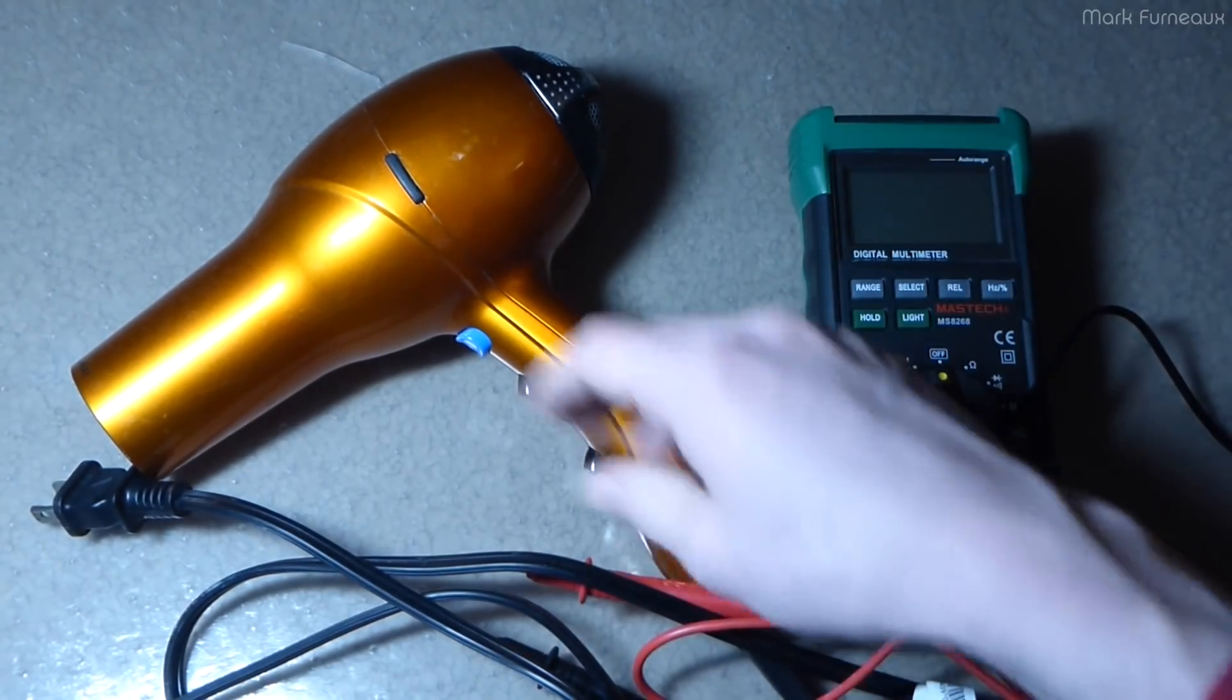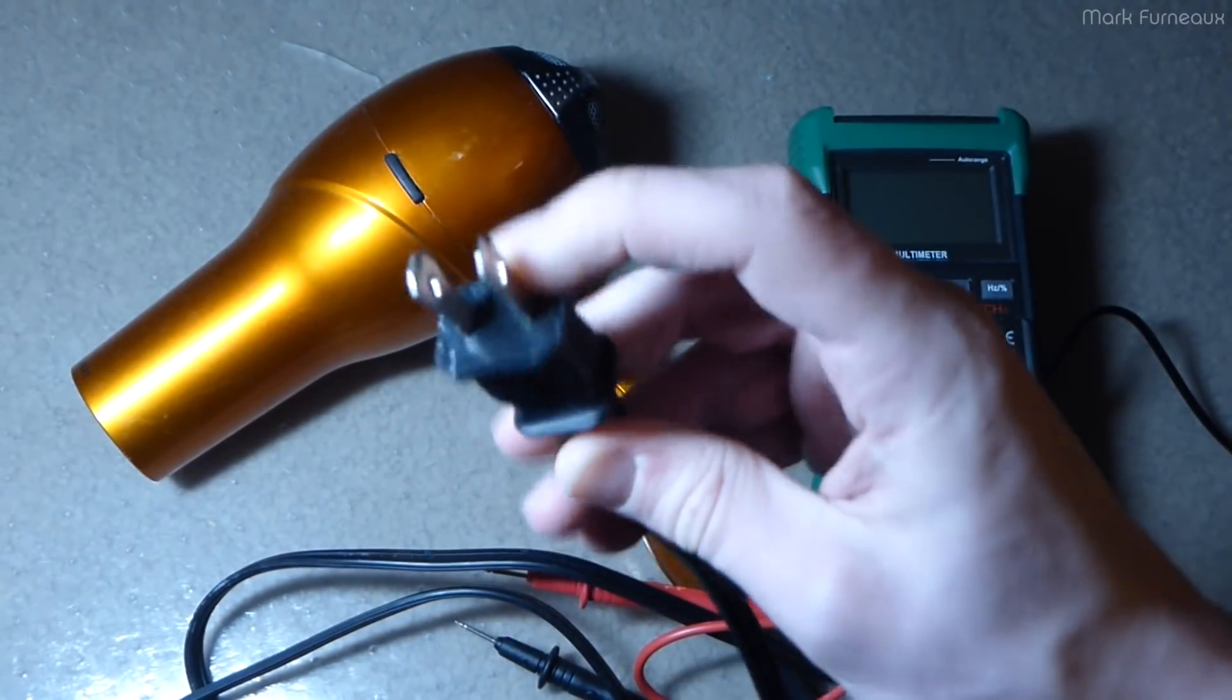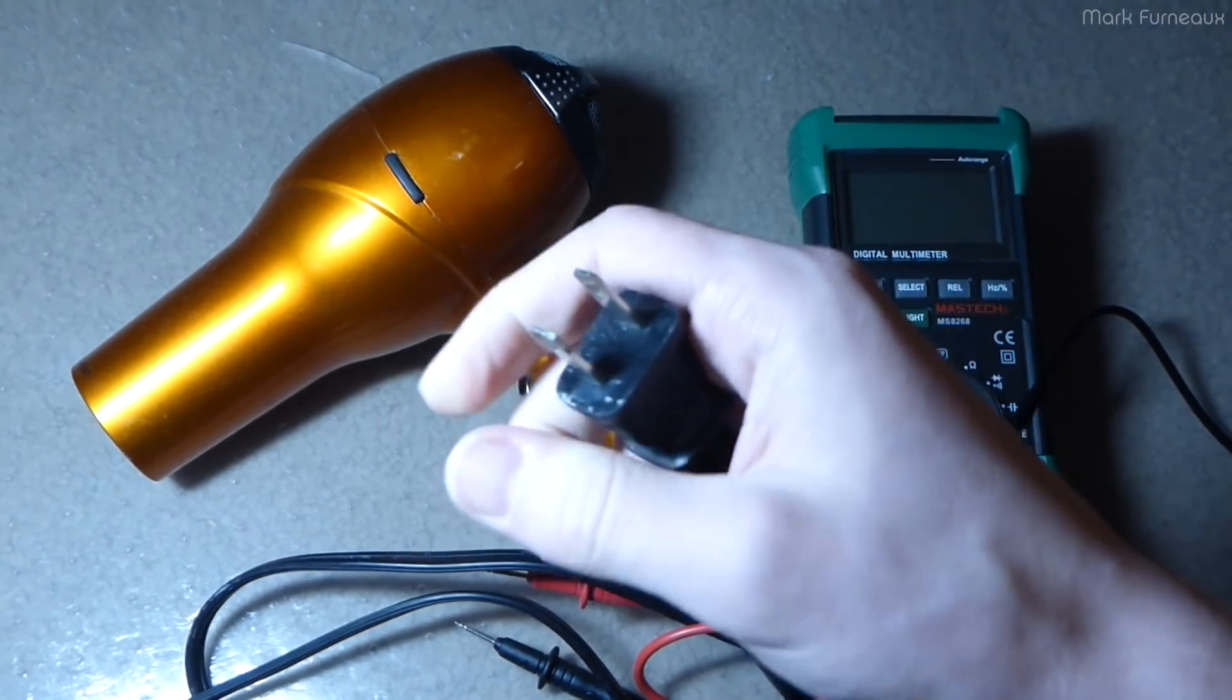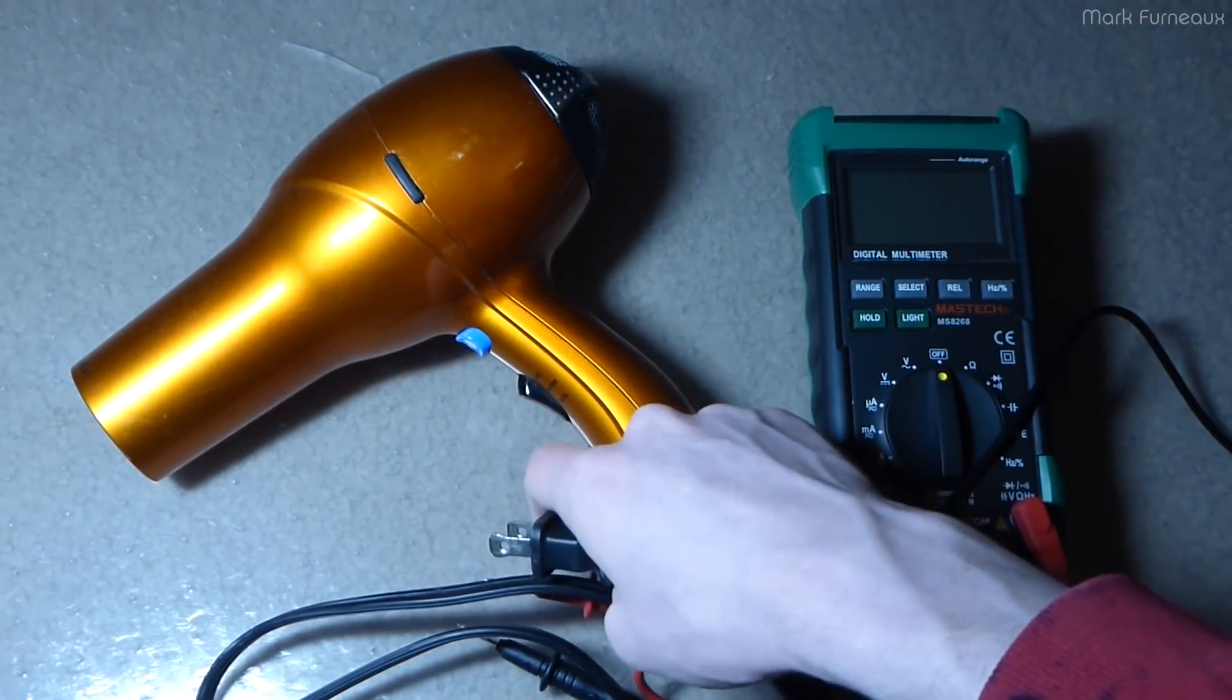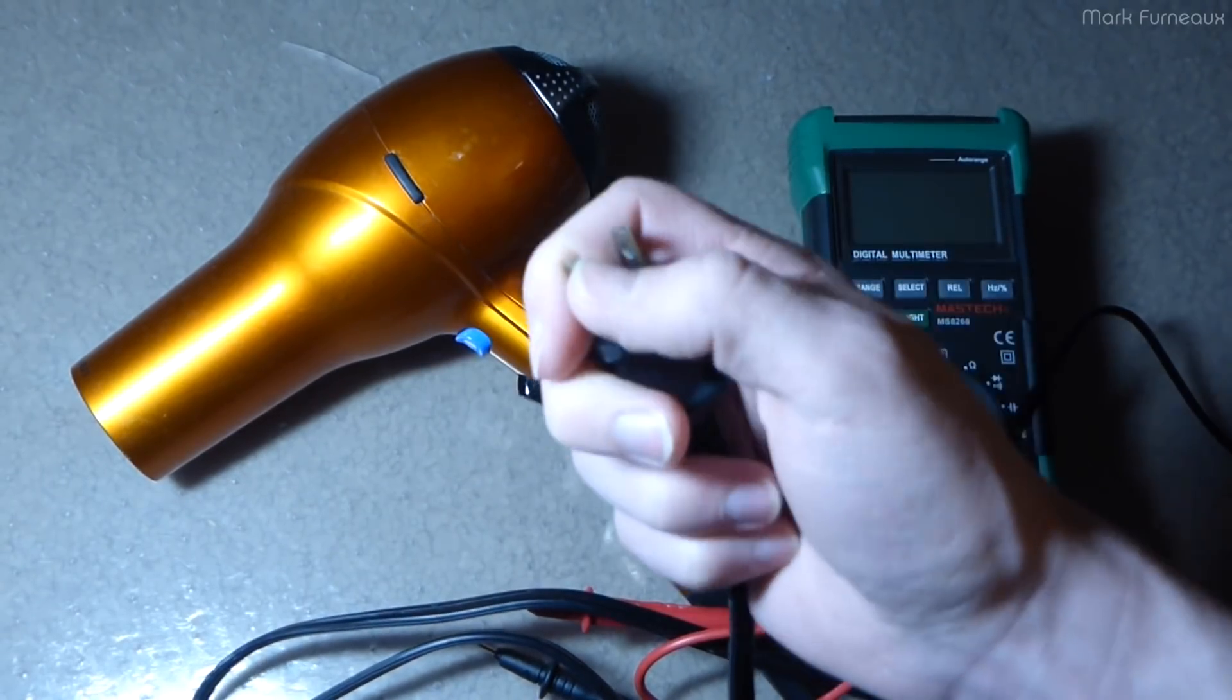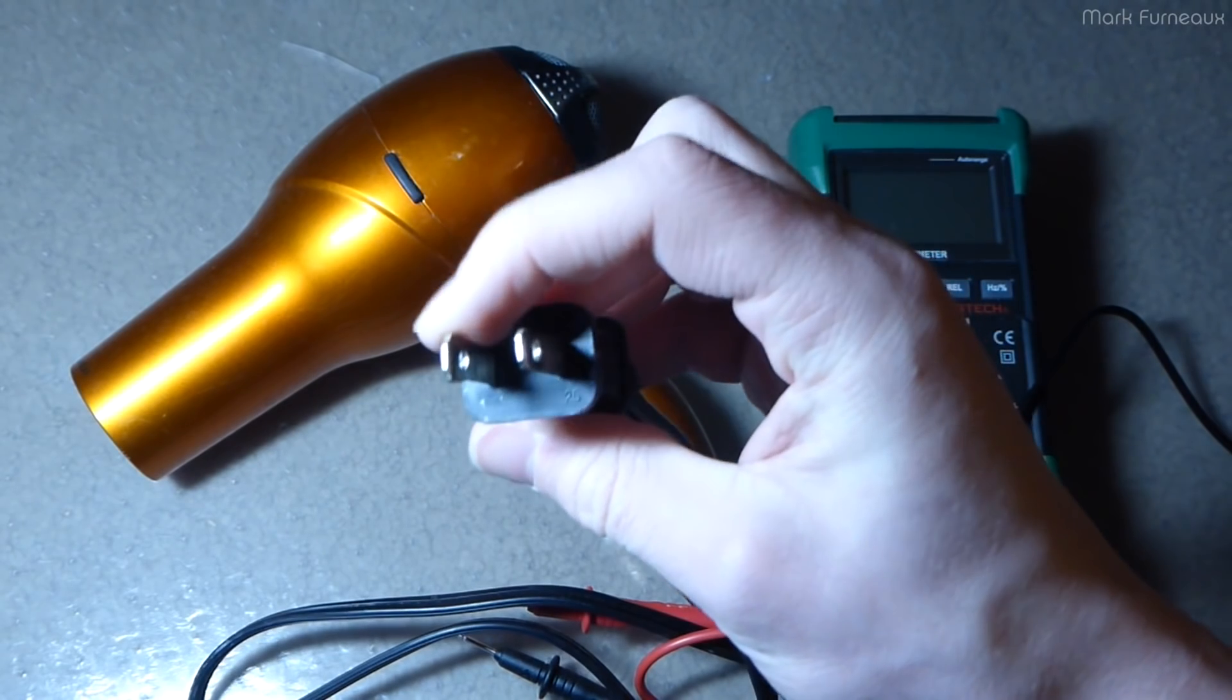And the reason why touching the neutral is safer than touching the live is because the neutral at some point in your house is tied to the electrical earth ground. It's tied to something that goes into the ground. And of course, since you're standing on the ground, you are at very close to the potential of the neutral.